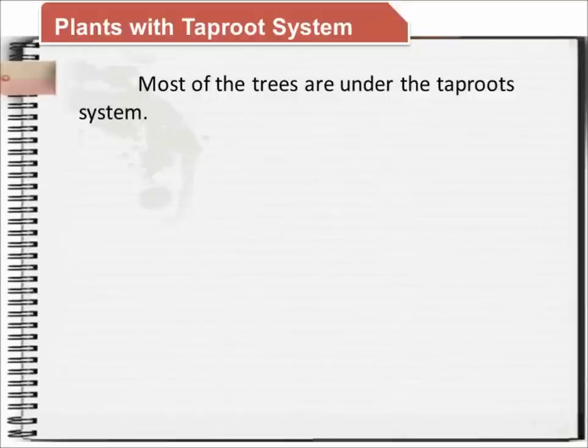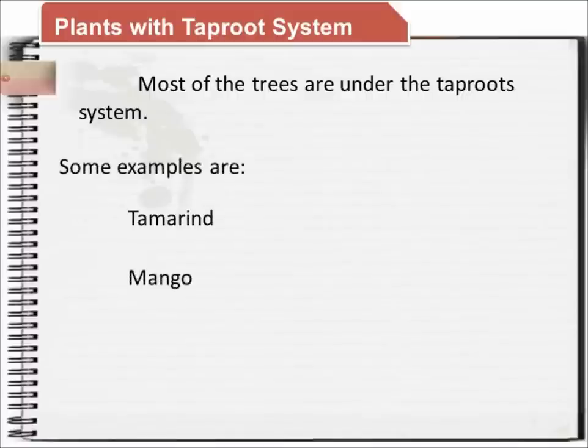Most of the trees belong to the taproot system. Examples are tamarind, mango, nara, and guava tree.